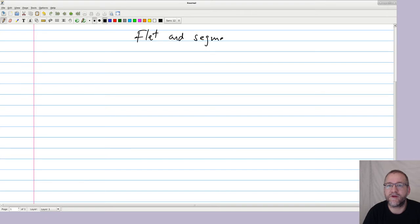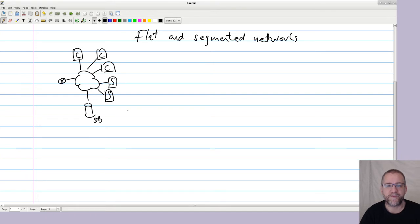Flat and segmented networks. So if we have a small company we might have a network that looks like this and then you have one subnet, you have some clients connected to this, you have your servers connected to this, and perhaps you even have a database connected to this. Since this is a single subnet with a lot of devices on it, we would refer to this as flat.